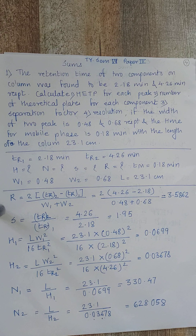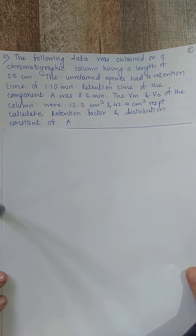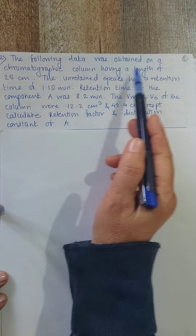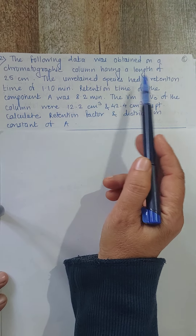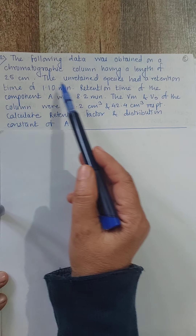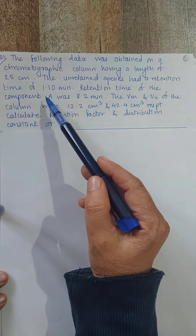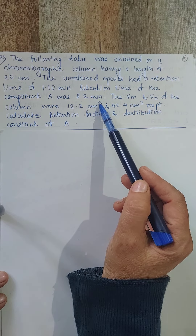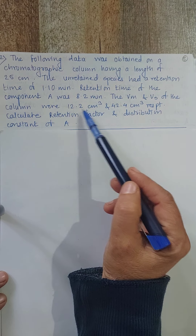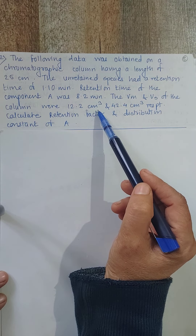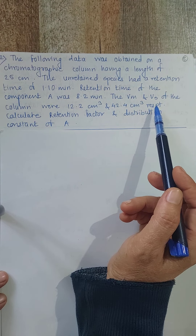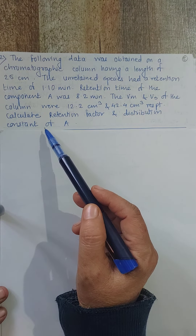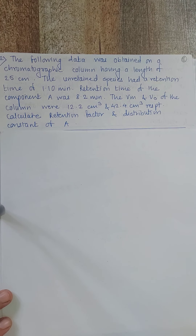Now the second problem: The following data was obtained on a chromatographic column having a length of 25 cm. The unretained species had a retention time of 1.10 minutes. Retention time of component A was 8.2 minutes. The Vm and Vs of the column were 12.2 cm³ and 42.4 cm³ respectively.